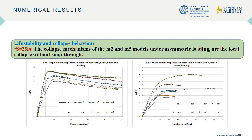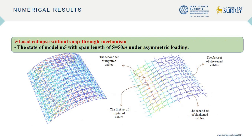After performing nonlinear analysis on all models, the load proportional factor–displacement response curves were extracted based on symmetric and asymmetric snow loading patterns. The collapse mechanisms are of the overall collapse type in all models, except for models M2 and M5 under symmetric loading for span lengths of 50 m and 100 m, which exhibit local collapse without snap-through type. To describe how the local collapse without snap-through mechanism forms, the state of model M5 with span length of 50 m under asymmetric loading at the collapse load level is examined.